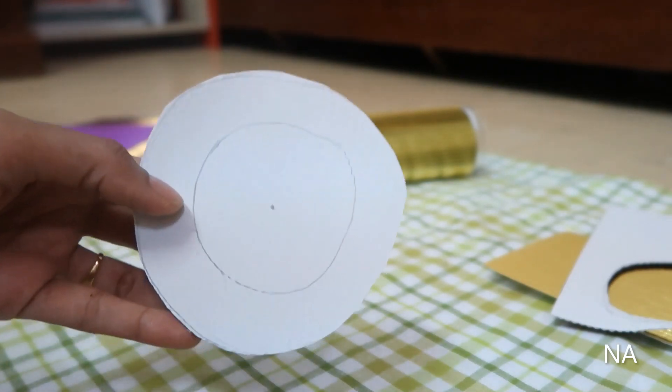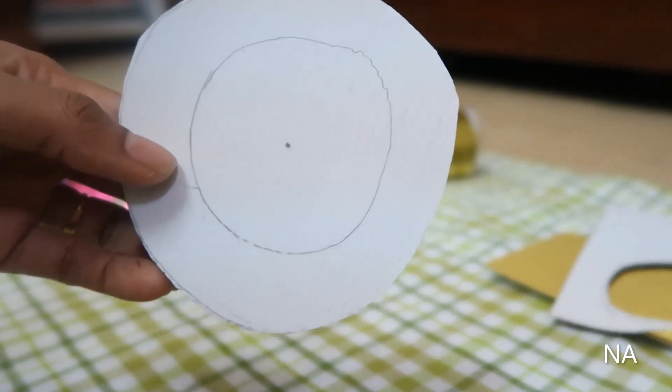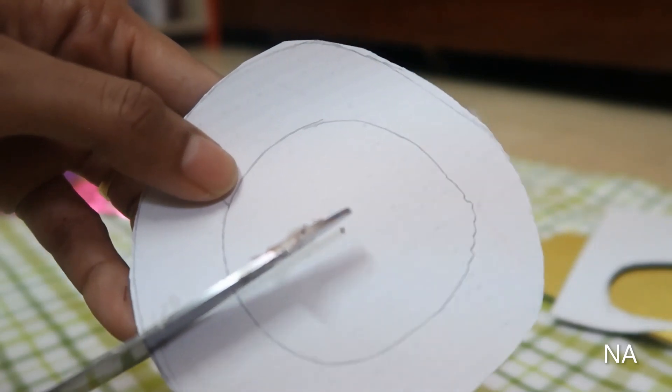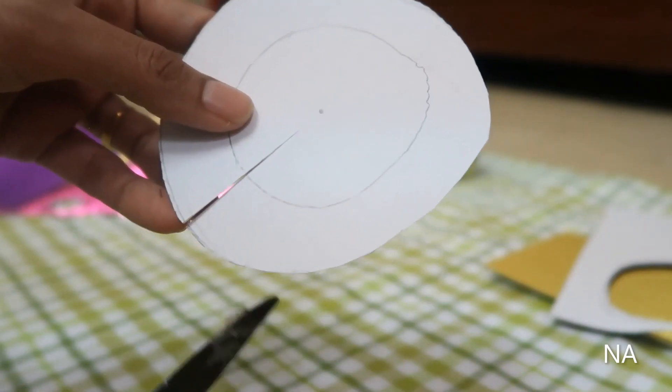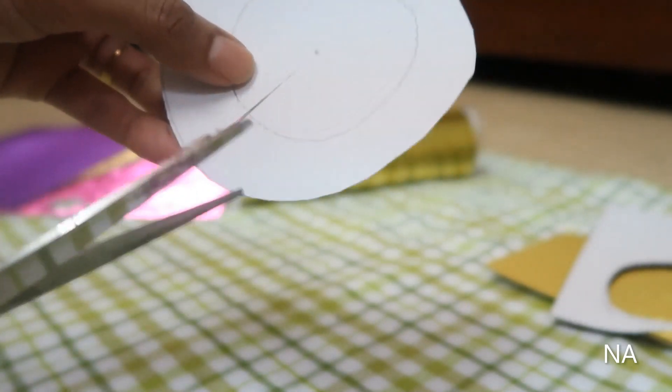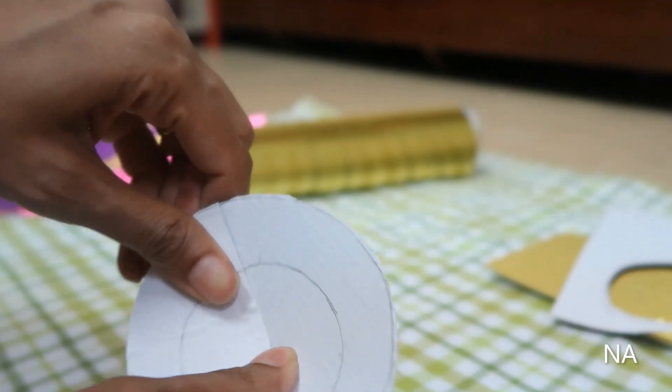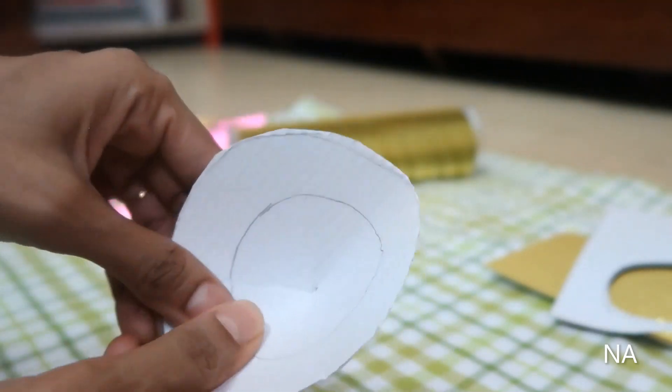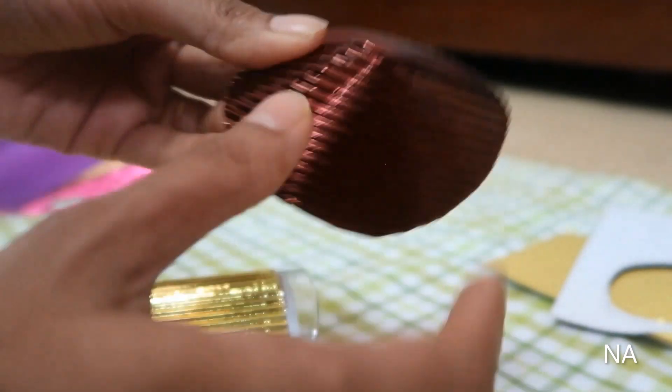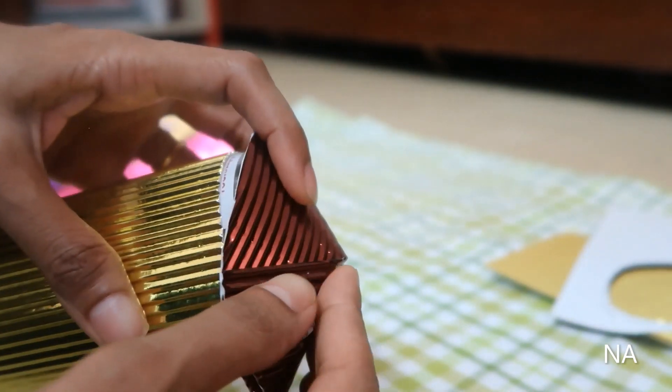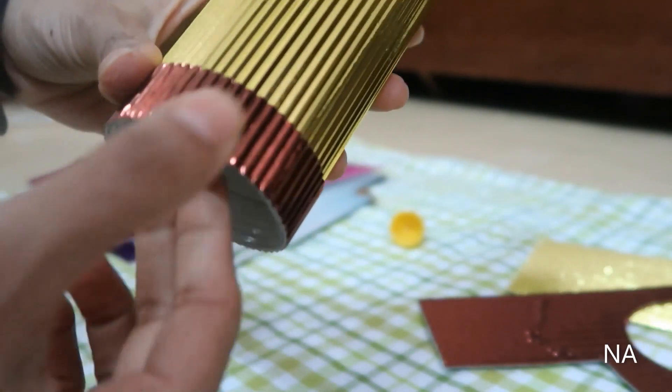Now here the circle is ready. Point the center and with the help of a scissor cut till the center as shown. Next make it into a cone shape as shown and paste it on top of our cylinder. You can stick it with the help of glue. Next to the bottom also I'll be sticking as shown.